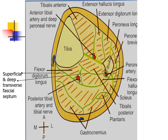You already learned the extensor compartment of leg muscles anteriorly: tibialis anterior, extensor hallucis longus, extensor digitorum longus, and peroneus tertius. Laterally, there are two muscles: peroneus longus and brevis. These are the subdivisions of the back of leg muscles.